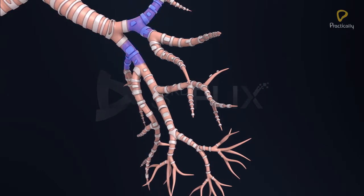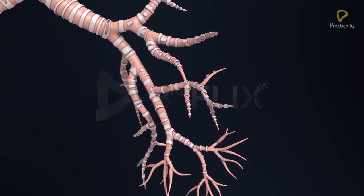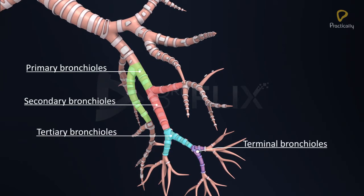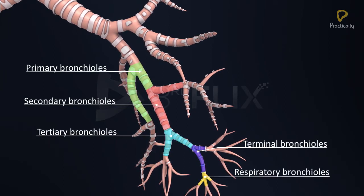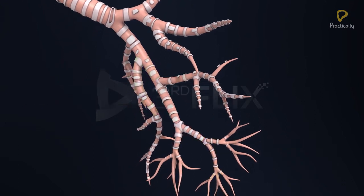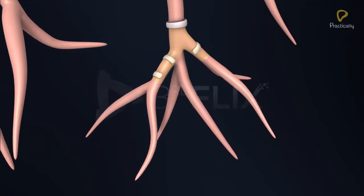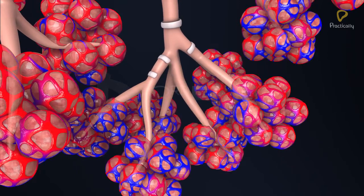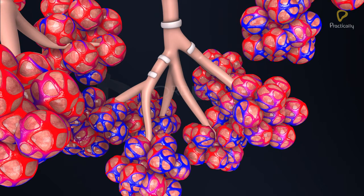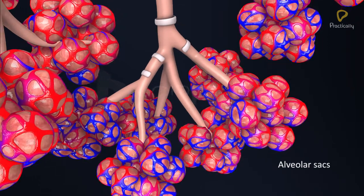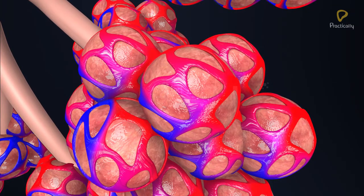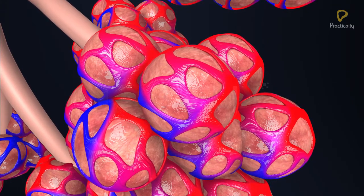Each tertiary bronchus divides and subdivides into primary, secondary, tertiary, terminal, and respiratory bronchioles sequentially. Each respiratory bronchiole terminates in a cluster of alveolar ducts, which open into atria. Each atrium is associated with 5 or 6 alveolar sacs. Each alveolar sac has numerous alveoli, each enclosed in a network of capillaries.